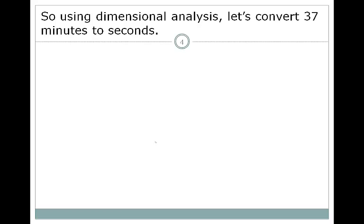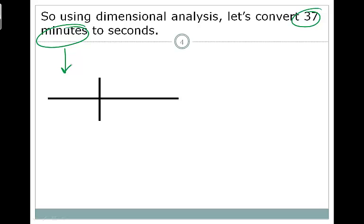Using dimensional analysis, let's convert 37 minutes into seconds. We have our conversion table, and the first thing we do is take our given — 37 minutes — and put it in the upper left-hand corner. If we want to convert minutes to seconds, we need to know the relationship, which is 1 minute is equal to 60 seconds.